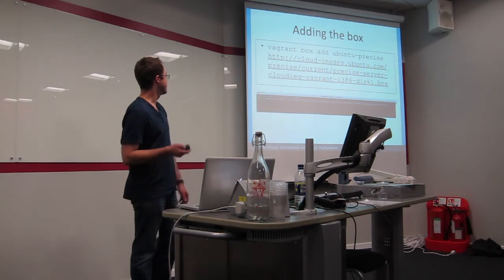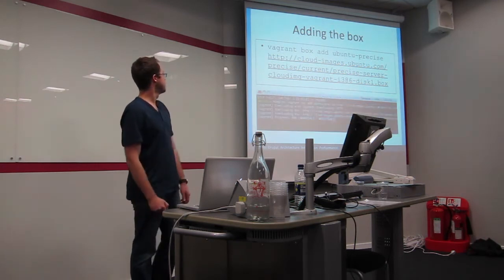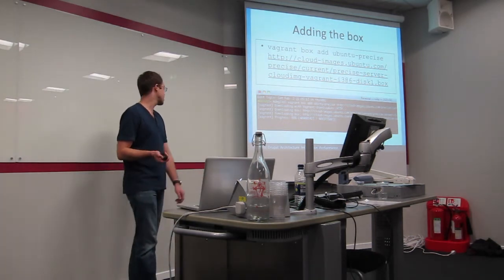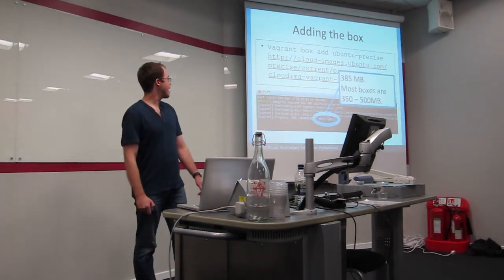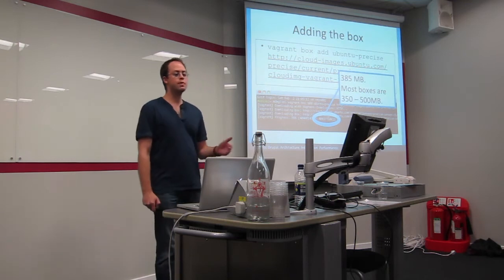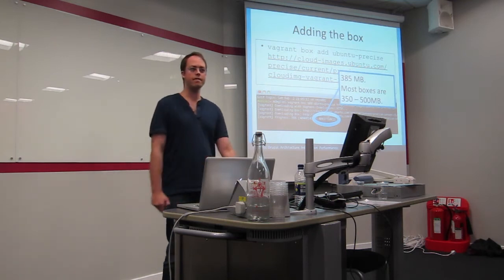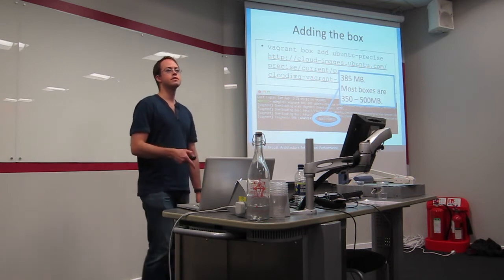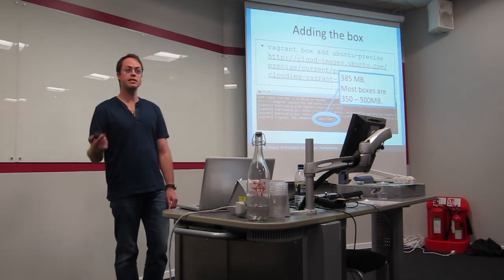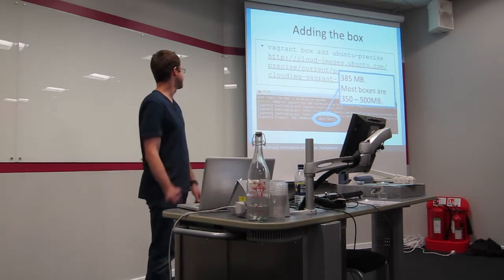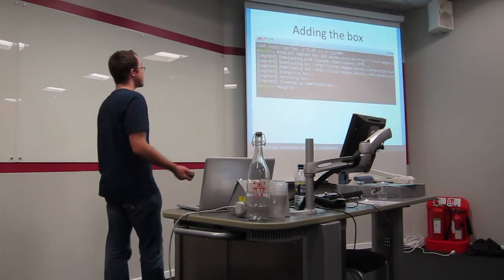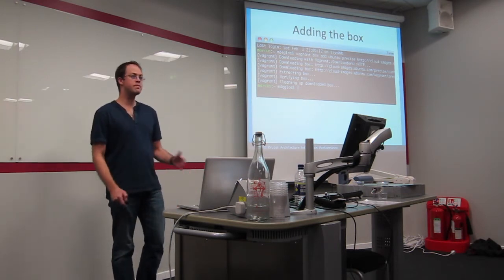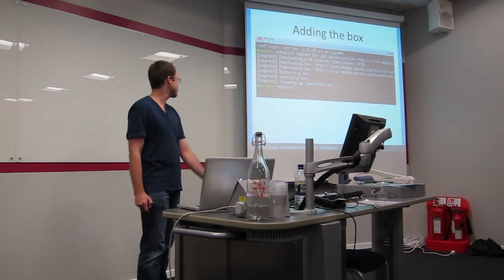So that's the command you type there. You type Vagrant box add, and you give it a name, and the URL. So that URL is a Vagrant box that's distributed by Canonical from Ubuntu. Once you've got the box, you do Vagrant init and Vagrant up, and you're kind of done. That's it. That is all of the instructions.